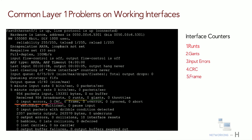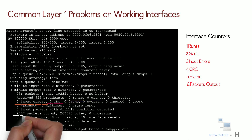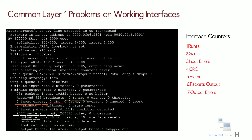The Frame counter increases when frames with an illegal format are received. The Output packet counter counts the total number of packets or frames forwarded out of the interface. The Output errors counter counts the total number of packets or frames that the switch port tried to transmit but for which some problem occurred. Finally, the Collision counter counts all collisions that occur when the interface is transmitting a frame.